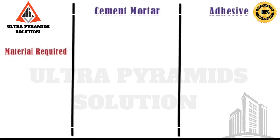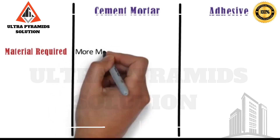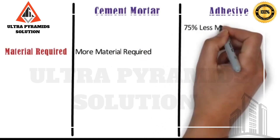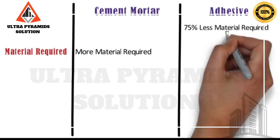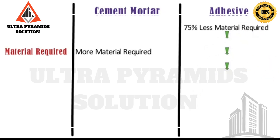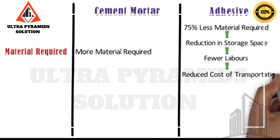Materials required: In case of cement mortar, the joint thickness is 8–12 mm, hence more material is required as compared to AAC block adhesives. Whereas, in case of AAC block adhesives, the joint thickness is 3–4 mm, hence 75% less material is required compared to conventional mortar. This leads to reduction in storage space, fewer loads to handle, and reduced cost of transportation.